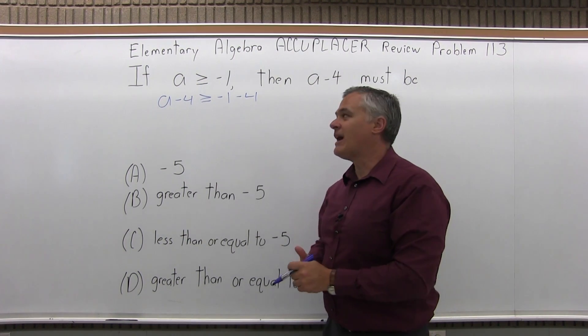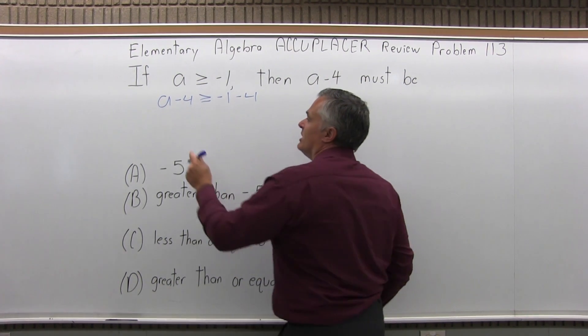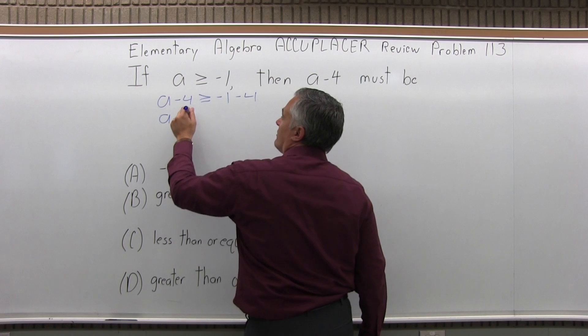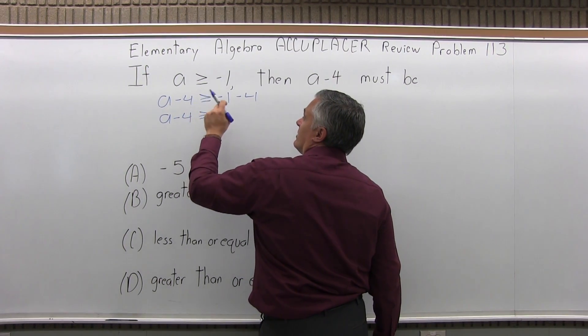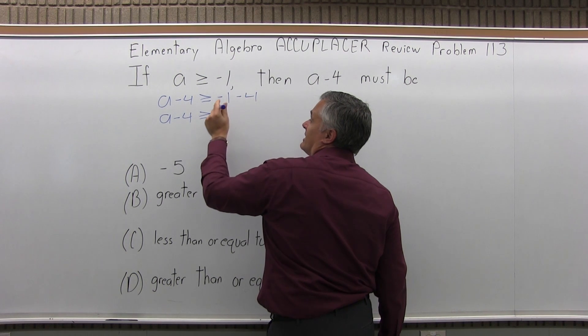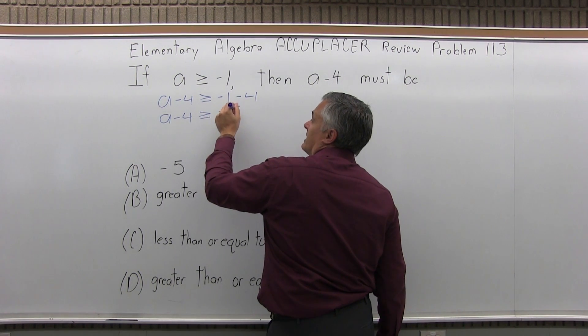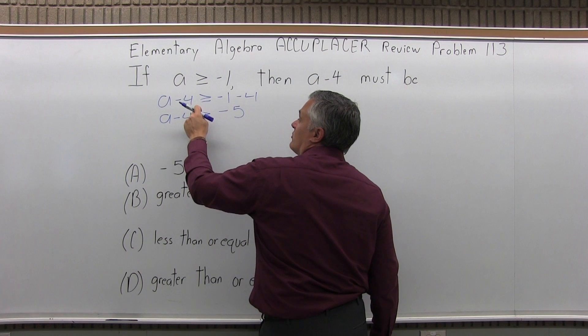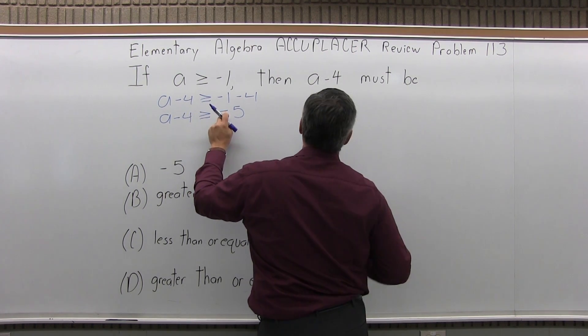It's when I multiply or divide that I would have to flip it. So A minus 4 is what I'm looking for, greater than or equal to. I'll just simplify the right-hand side: negative 1 minus 4 becomes negative 5. So I have A minus 4 is greater than or equal to negative 5.